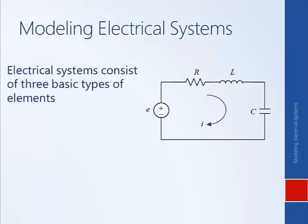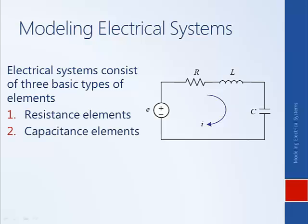When we discuss electrical systems and model them, we will consider three basic types of elements: resistance elements, capacitance elements, and inductance elements. Just as was the case with mechanical systems where we talked about spring elements and damper elements, we don't literally mean resistors and capacitors. We could have a piece of wire and talk about its capacitance properties or its inductance properties.